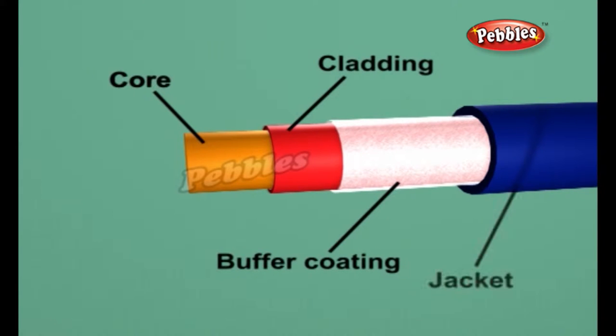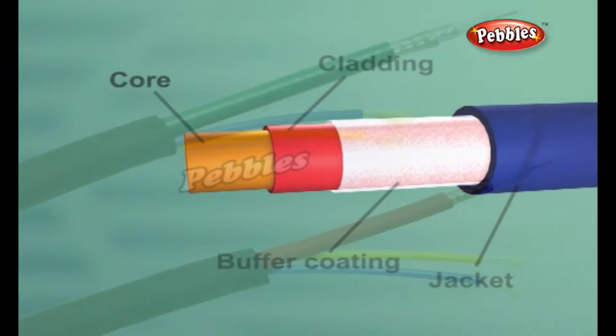Hundreds of thousands of these optical fibers are arranged in bundles in optical cables. The bundles are protected by the cable's outer covering called a jacket.